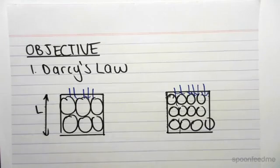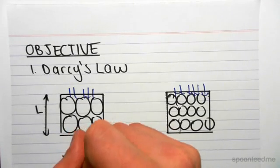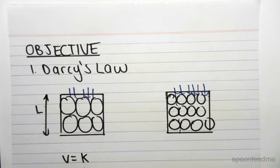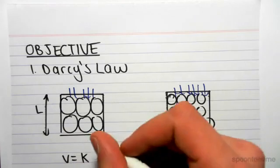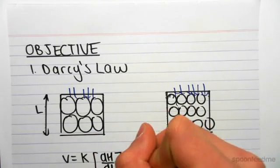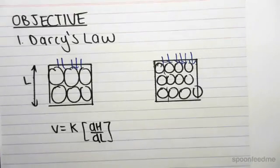So, we can say that the velocity is equal to K, which is a proportionality constant we're going to define in a second, which takes into consideration the different soil samples we have based on their particle sizes, if you want to think about it like that, as well as the change in head divided by the change in length.